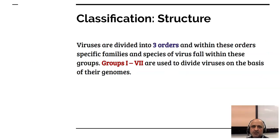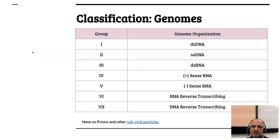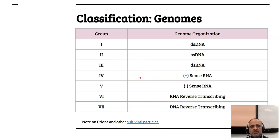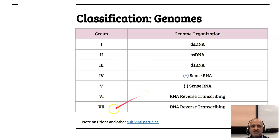The classification based on structure uses groups 1 to 7 based on the Baltimore classification scheme. Group 1 represents the double-stranded DNA viruses. Group 2 represents the single-stranded DNA viruses. Group 3 represents the double-stranded RNA viruses. Group 4 is the plus-sense RNA viruses consisting of a positive-stranded RNA molecule. Group 5 consists of the negative-stranded RNA molecule containing viruses. Group 6 is the RNA reverse transcribing viruses and Group 7 represents the DNA reverse transcribing viruses.